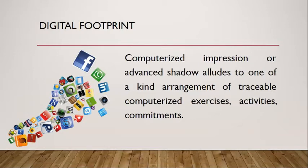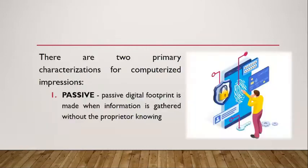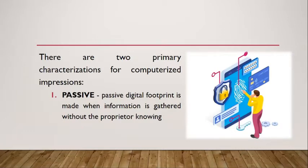There are two primary classifications of digital footprints. Number one is the passive digital footprint. A passive digital footprint is made when information is collected without the owner knowing — otherwise called a cold data trail. In an online situation, a footprint may be stored in an online database as a hit, tracking the user's IP address, when it was made, and where they originated from, with the footprint later being analyzed.